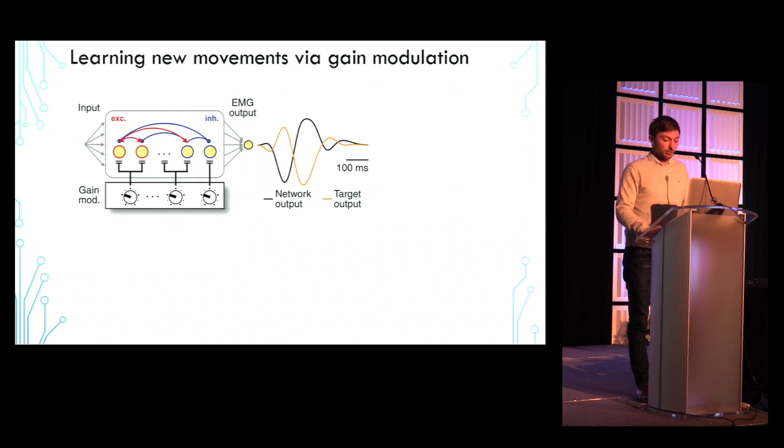We wanted to investigate whether we are able to learn an arbitrary target movement, shown here in orange, through only gain modulation. The initial network output with all the gains set to one is shown here on the right in black. We changed the neuronal gains using a reward-based node perturbation learning rule, such that the obtained gain pattern generates the desired target output.